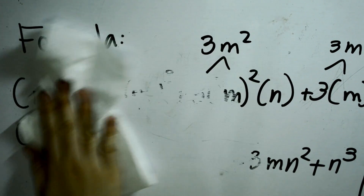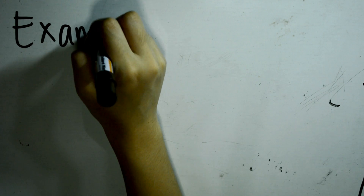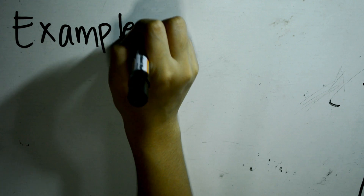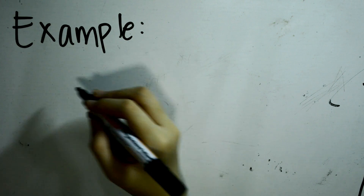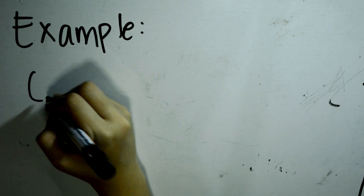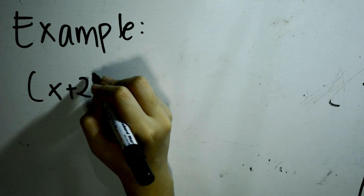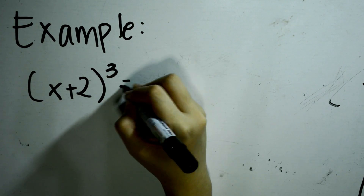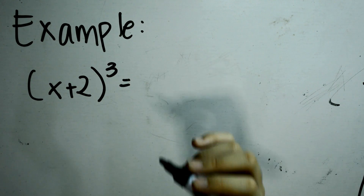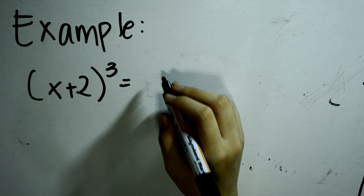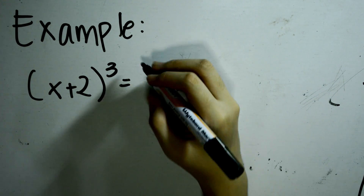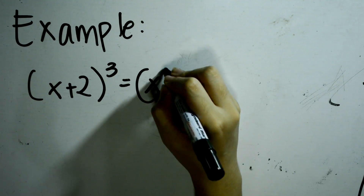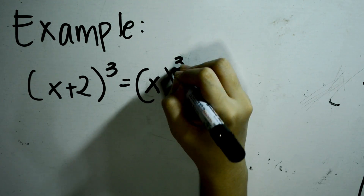So, example: (x + 2) cubed. Again, we are going to cube the first term: x cubed.